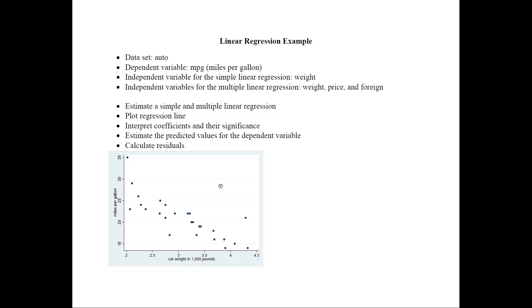Here is the data shown in a scatter plot. On the horizontal axis I have the x variable, which is car weight in thousand pounds, and on the vertical axis I have miles per gallon, our dependent variable — the y variable. These are the actual values for y. As you can see from this plot, we have pretty well-behaved data and there is already a negative relationship, so if we were to plot a line as close to all the dots as possible, it would go somewhere right here.